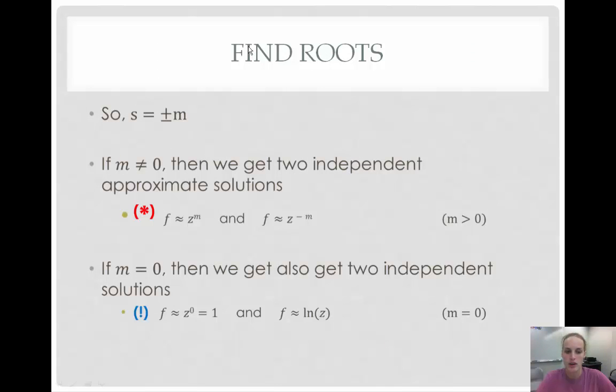When we solve that, we can find that our roots are positive and negative m. Now, there's two different types: when m is equal to zero and when m is not equal to zero. When m is not equal to zero, we get two independent approximate solutions of z to the m and z to the negative m, and we'll denote this as the red star.